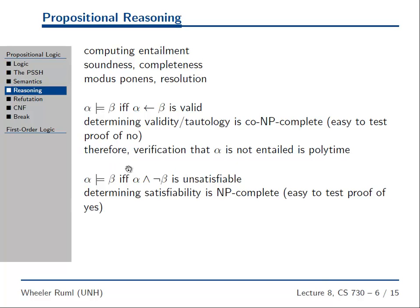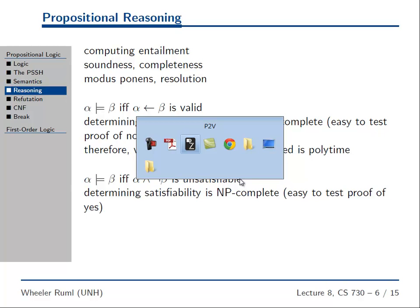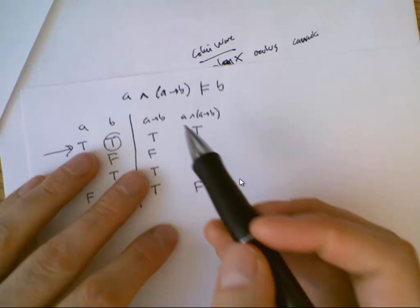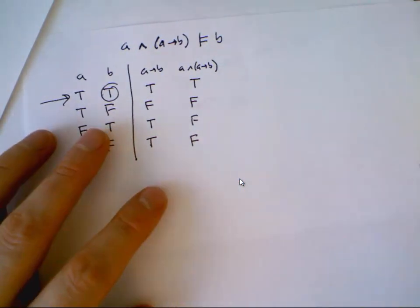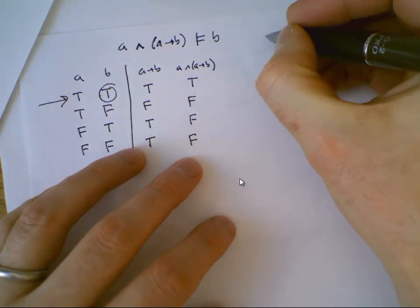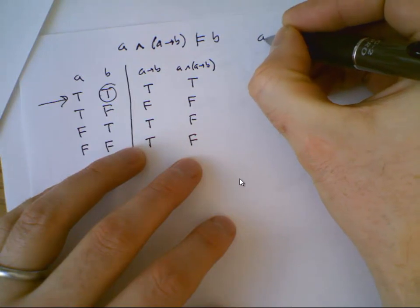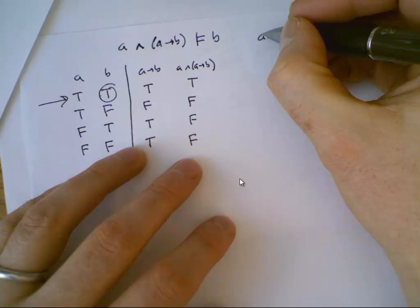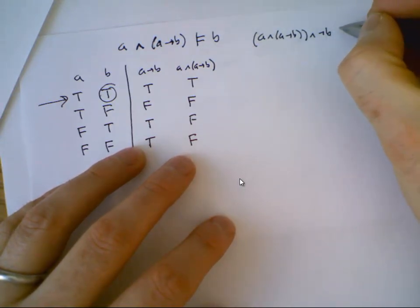What this theorem on the slide shows is that entailment is equivalent to unsatisfiability: alpha entailing beta is absolutely equivalent to asking whether alpha and not-beta is unsatisfiable. A formula is unsatisfiable if there's no model where it's true. Let's verify this in our example. Our alpha is the knowledge base A and A implies B, and our beta is B, so we need to check whether alpha and not-B is unsatisfiable.